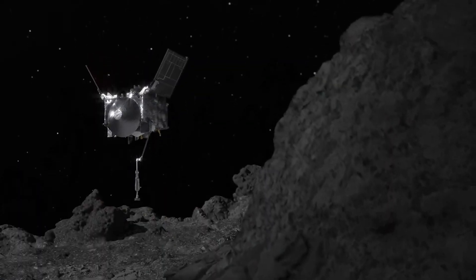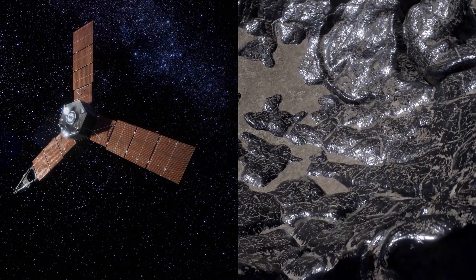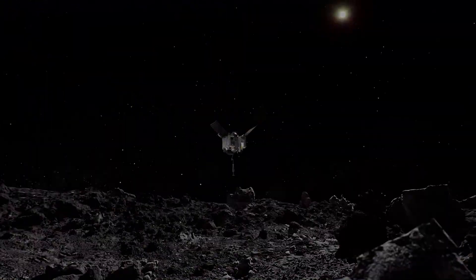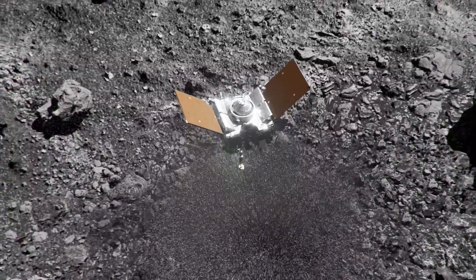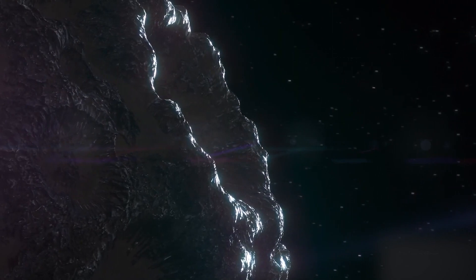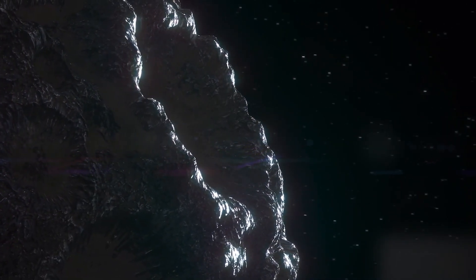So, once NASA's spacecraft finally meets up with Psyche, it's in for about a two-year asteroid vacation. During that time, it's basically doing what we do on a trip. Taking selfies, well, not really. Making maps and gathering all sorts of info to figure out what's up with Psyche.